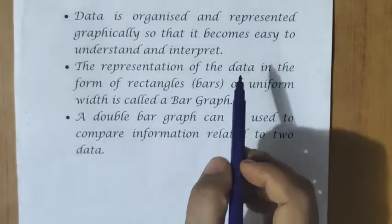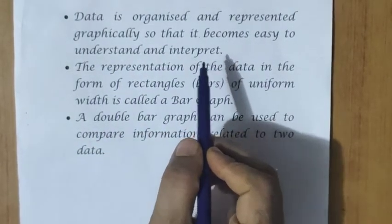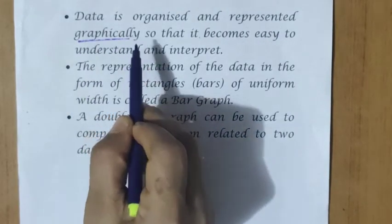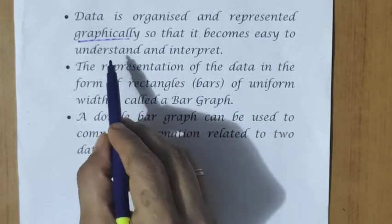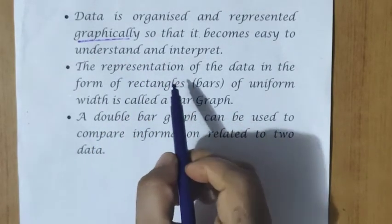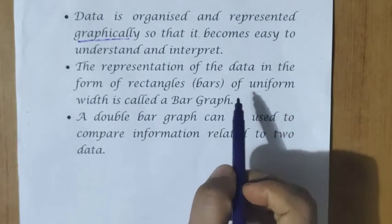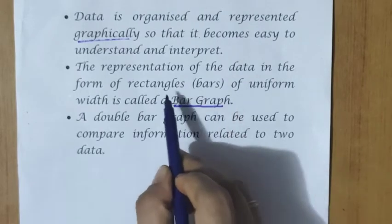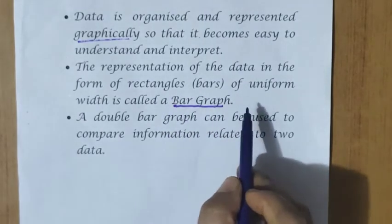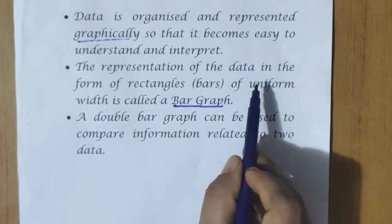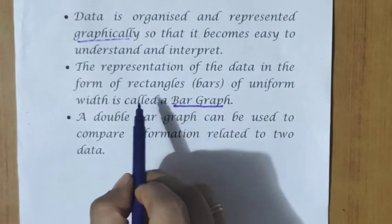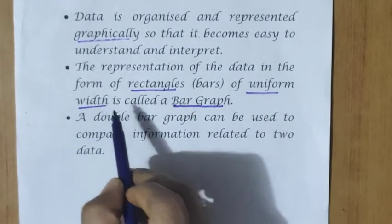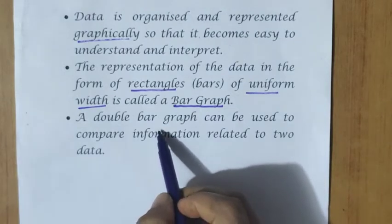Data is organized and represented graphically so that it becomes easy to understand and interpret. Graphs are always comfortable for explanations and children like pictorial representation. The representation of data in the form of rectangles of uniform width is called a bar graph. That is the first graph we are going to study here.